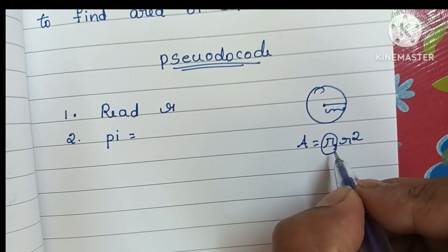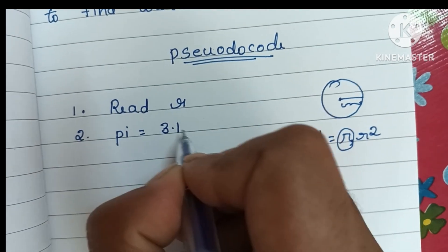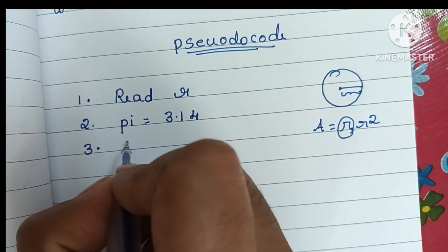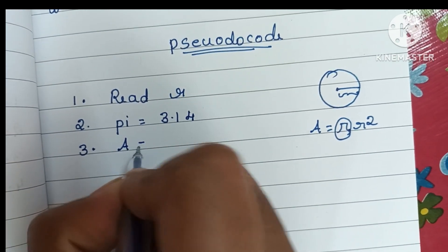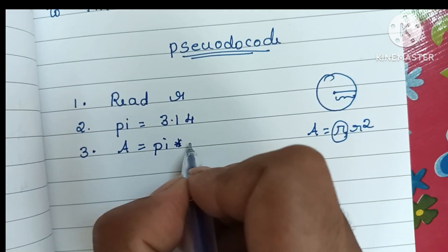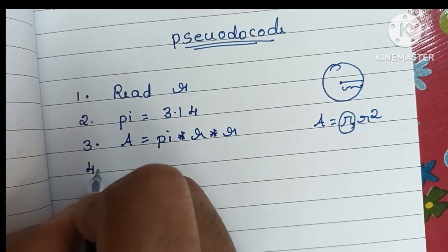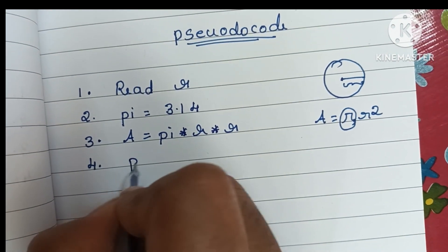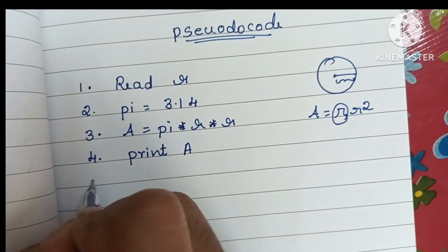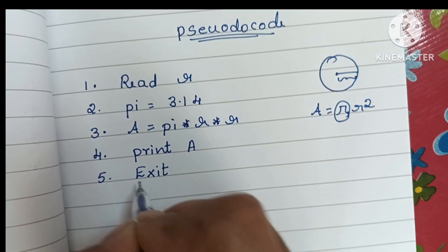Pi is a defined value, so we declare pi as 3.14. Next, step three, we have to calculate the area of the circle: A is equal to pi into r into r. Step four, we have to print the area value — print A.